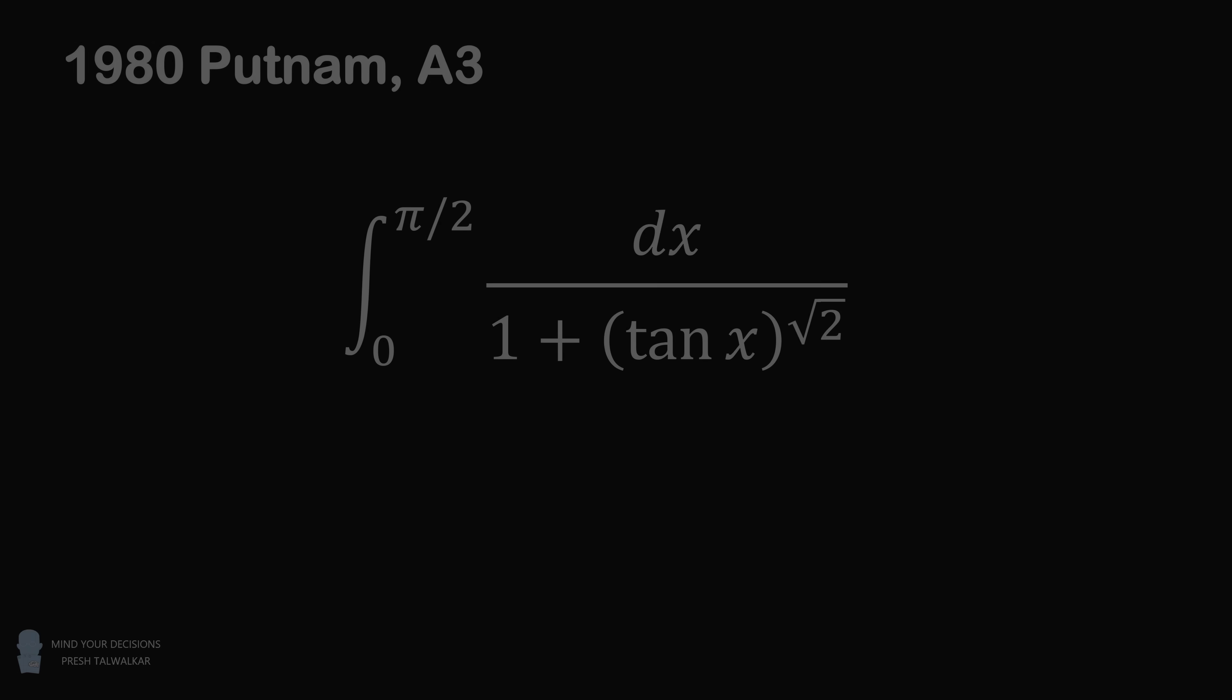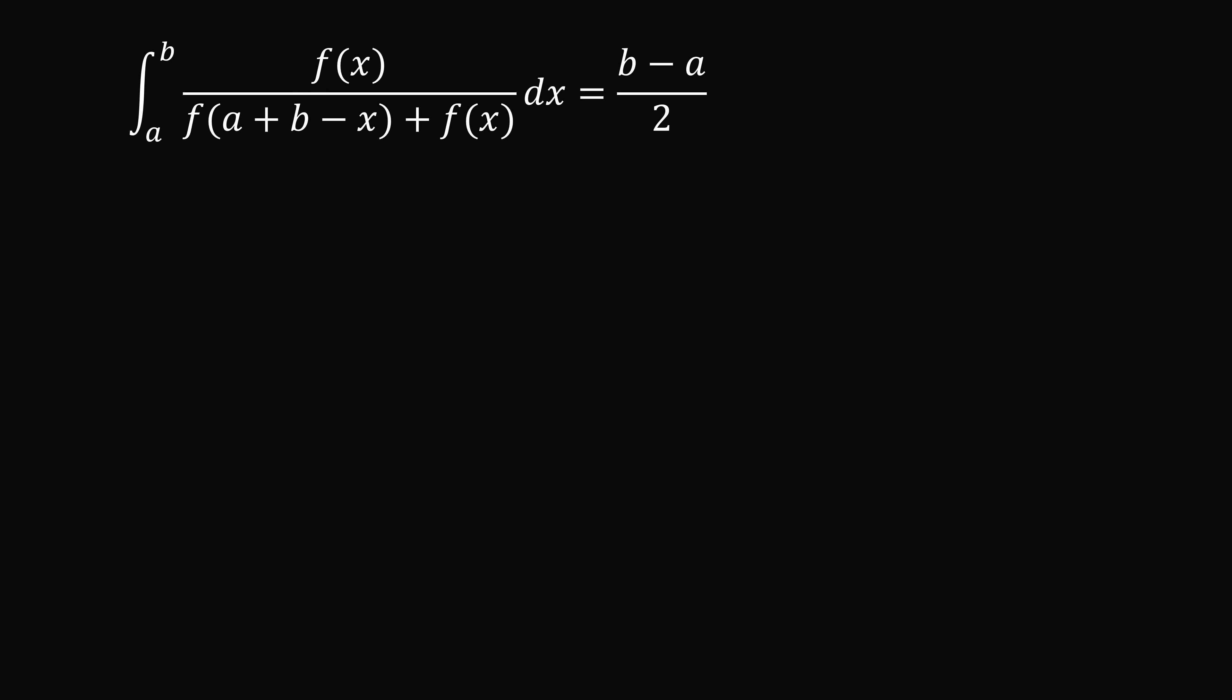There's actually a remarkable trick to solve this problem in seconds. It's known as the King's rule or King's property of definite integrals. The integral from a to b of f(x) divided by f(a + b - x) + f(x) dx is equal to (b - a) over 2. So how does this help us solve this question?